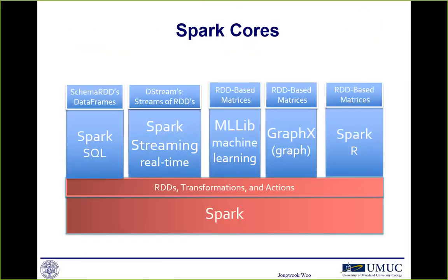There are many Spark core components. Spark SQL and DataFrame are for data analysis and sometimes predictive analysis. For streaming there is Spark Streaming API. For machine learning there is MLlib and ML. For graph there is GraphX, and for all there is Spark R. These are based on the fundamental storage for Spark plus transformation and action functions.